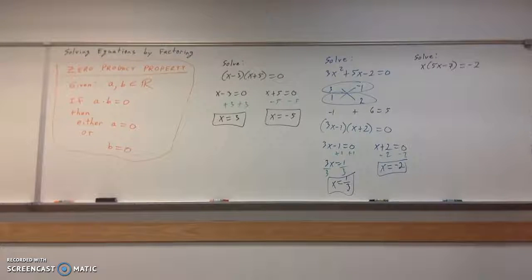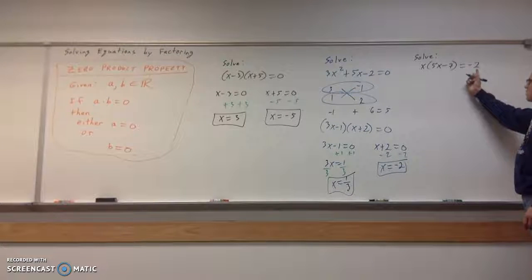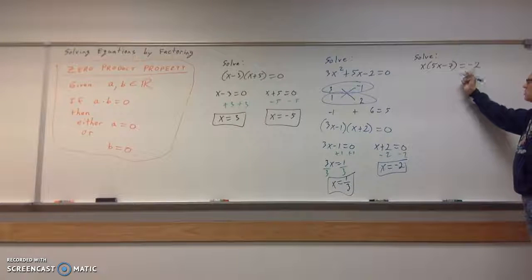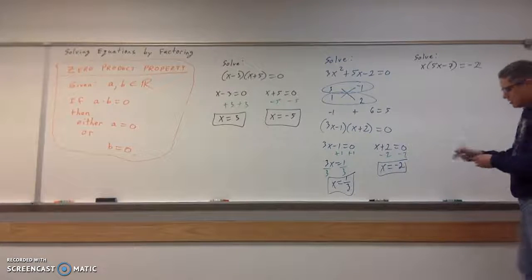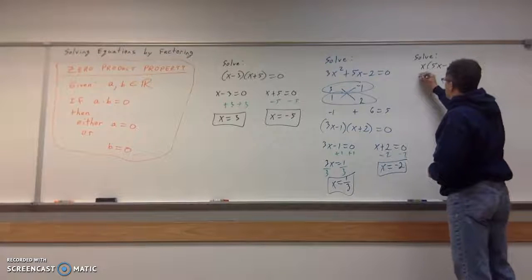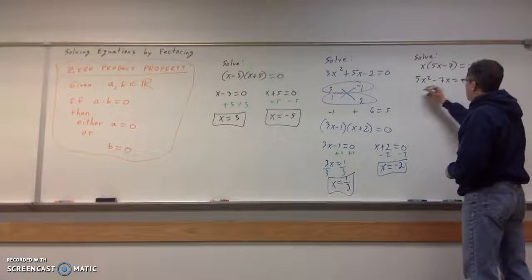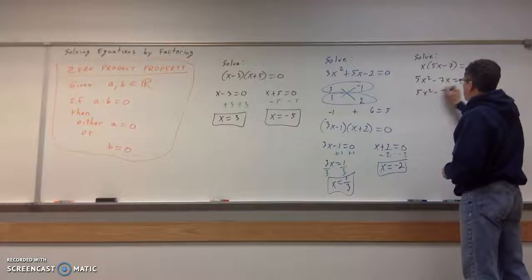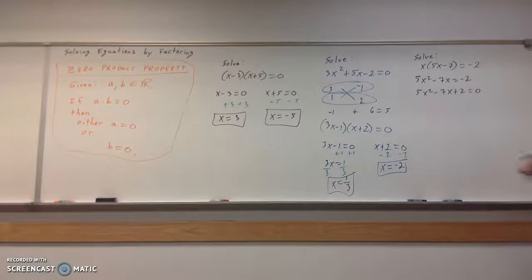So this video is getting a little long. I apologize. x times the quantity of (5x - 7) equals negative two. So you can add two to both sides first, but I suspect a lot of people are going to want to distribute first, which is fine. You can do either one. So we've got 5x² - 7x equals negative two, or 5x² - 7x + 2 equals zero. Then you want to go ahead and factor.